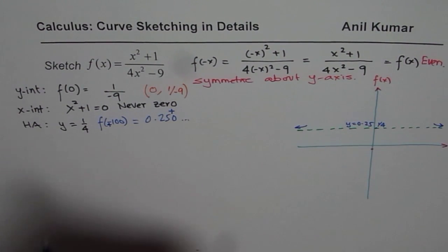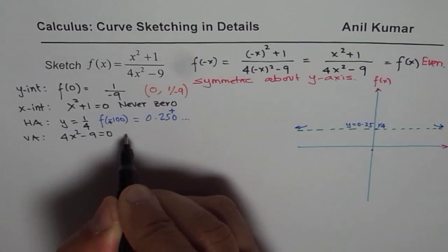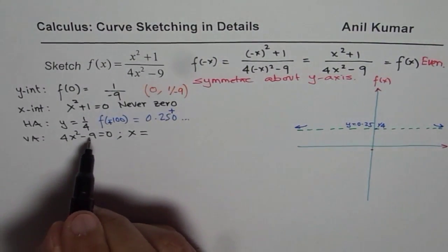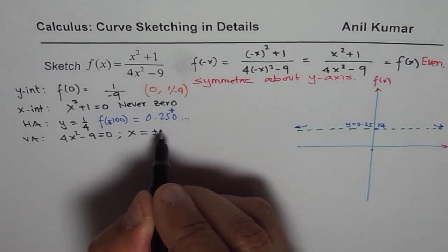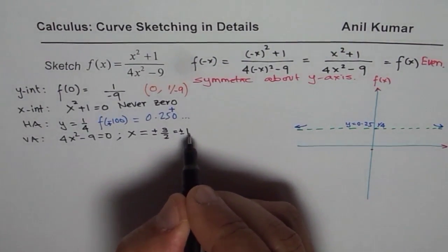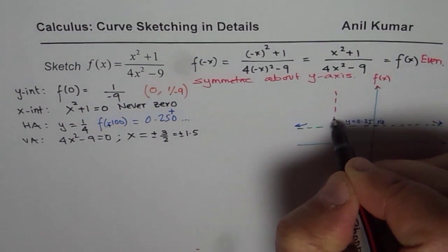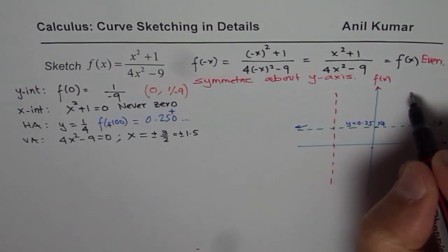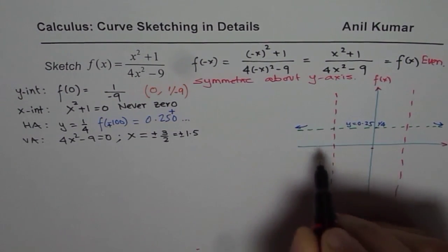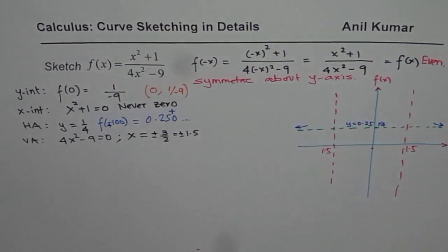Now let us find the vertical asymptotes. Vertical asymptotes occur when the denominator is 0, that is 4x² - 9 = 0. That gives x = ±√(9/4) = ±3/2, or ±1.5. So x = ±1.5 are the vertical asymptotes. Let us sketch the two vertical asymptotes. Since the function is symmetric, these are exactly at the same distance from the y-axis — at x = -1.5 and x = +1.5.